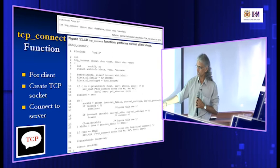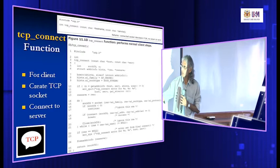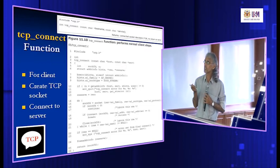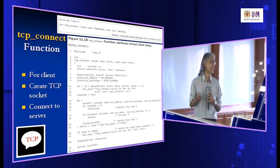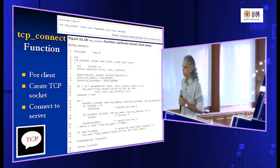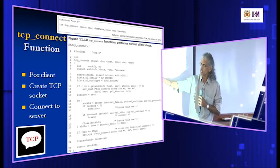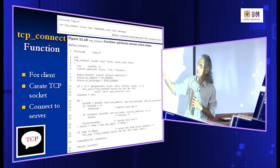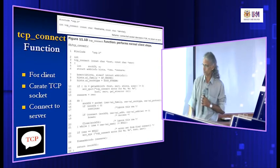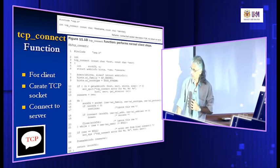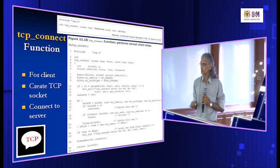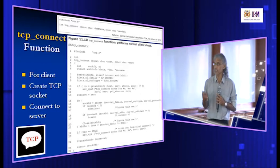Once connected, we have a socket which has been connected, and we return this socket to the calling program. TCP connect takes the host name and service name and returns a connected socket to the particular host. All the connection details are hidden inside the function. Since we use getAddressInfo, which creates a dynamic structure, before returning from this function we must free the memory allocated by getAddressInfo using the freeAddressInfo function.